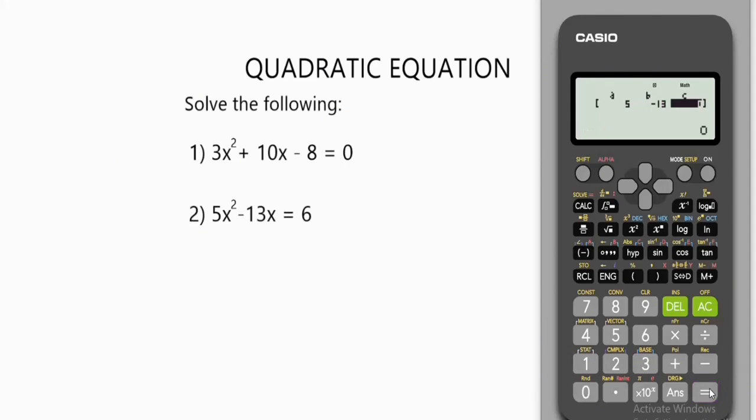Press equals. Now remember the constant is now negative 6, because the plus 6 crossed over the equality sign. So it's no longer 6, it's now negative 6. Input negative 6. Press equals to enter. Press equals again to find the roots of this quadratic equation. We have x1 to be 3, and x2 to be -2/5.